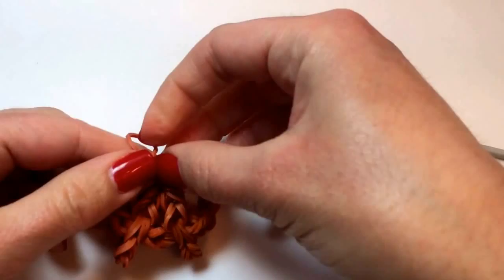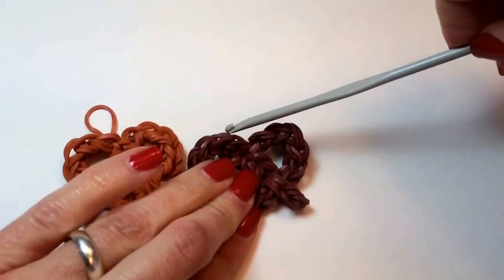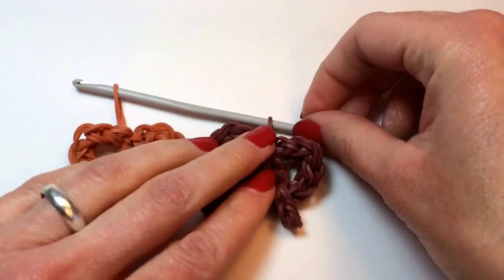And you've got your very own pretzel charm. As this rests, it will get a little bit tighter. I hope you enjoyed making a pretzel with me today on your crochet hook or your rainbow loom hook, whatever it is you had to use.